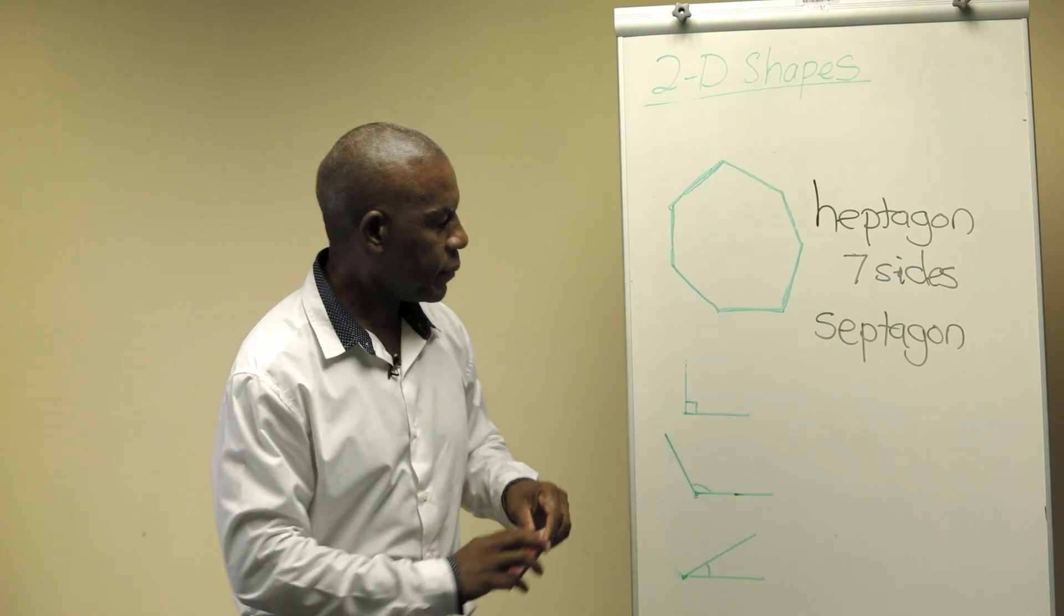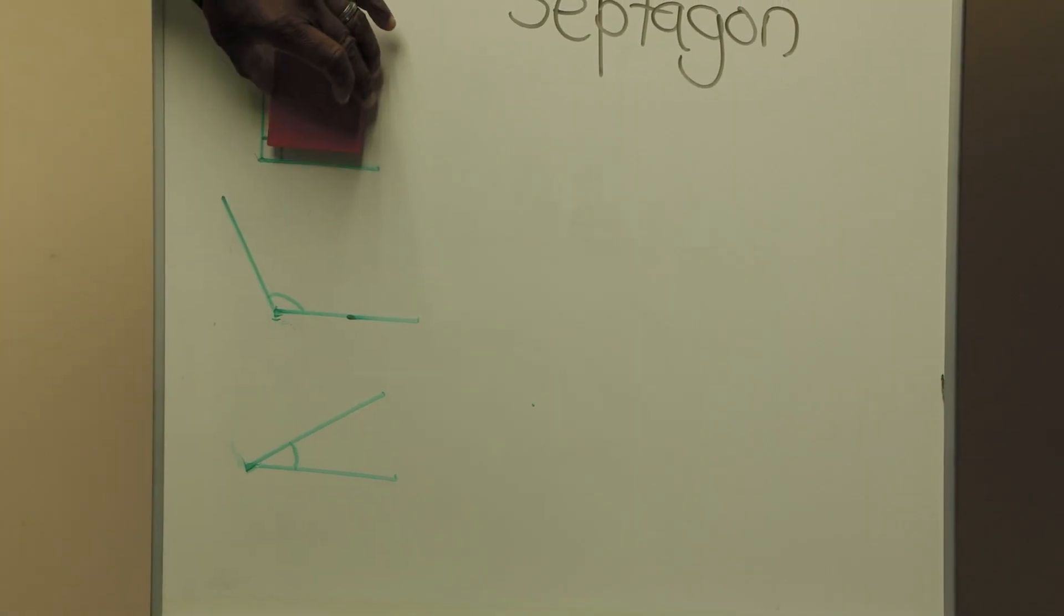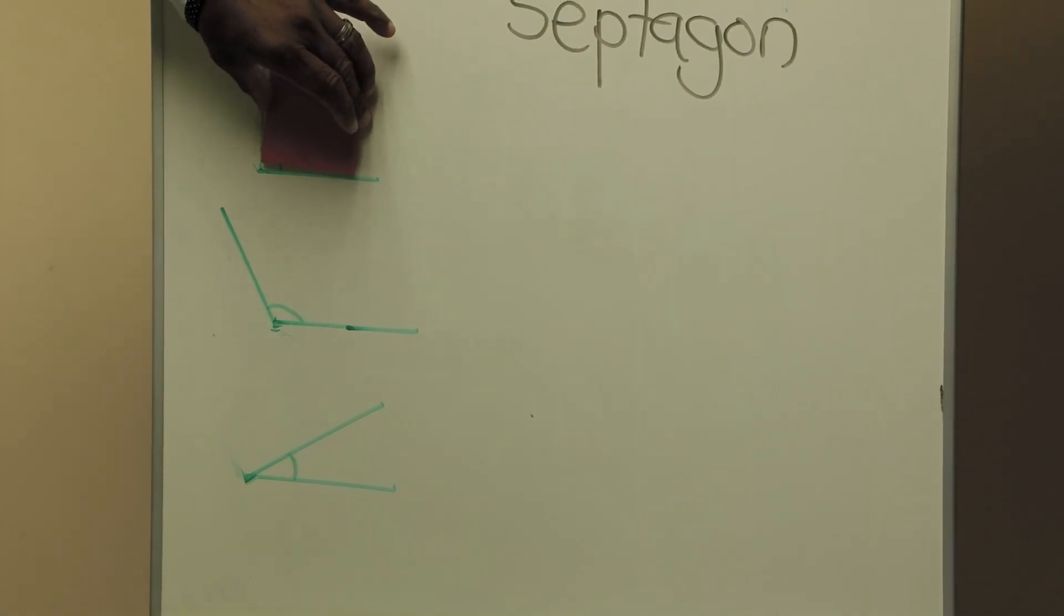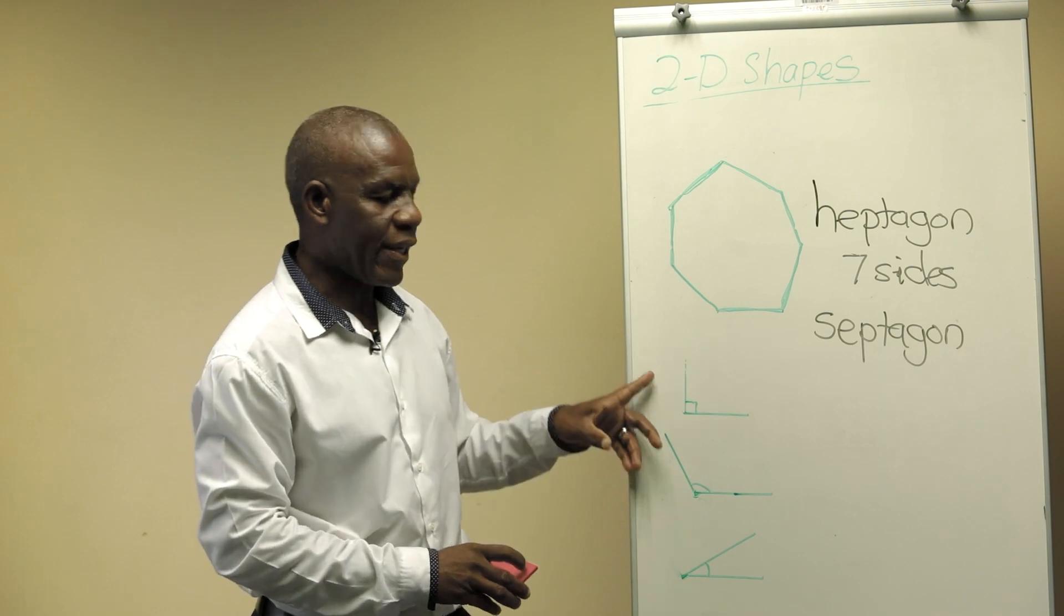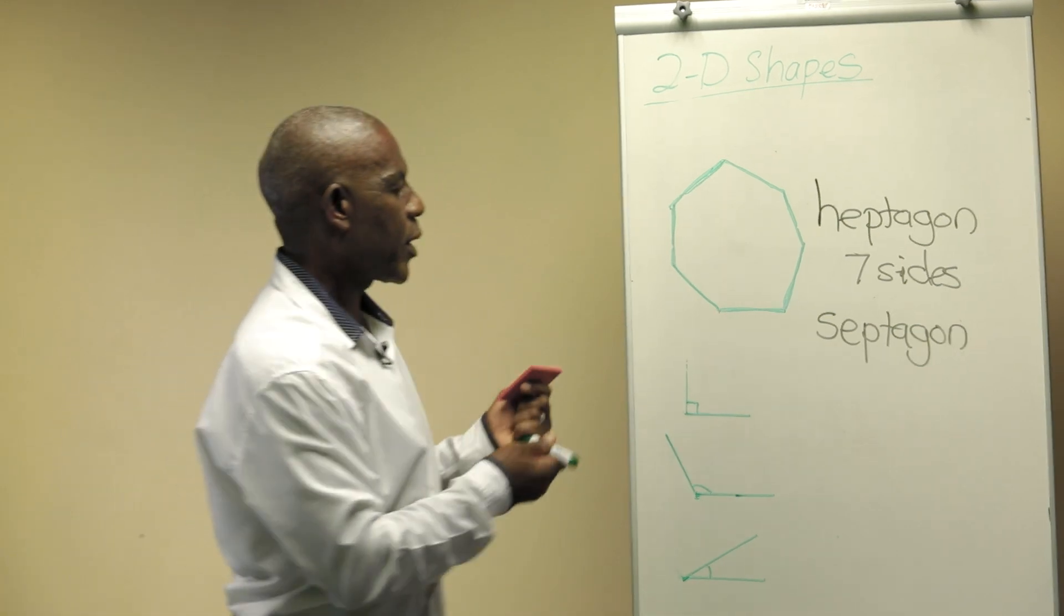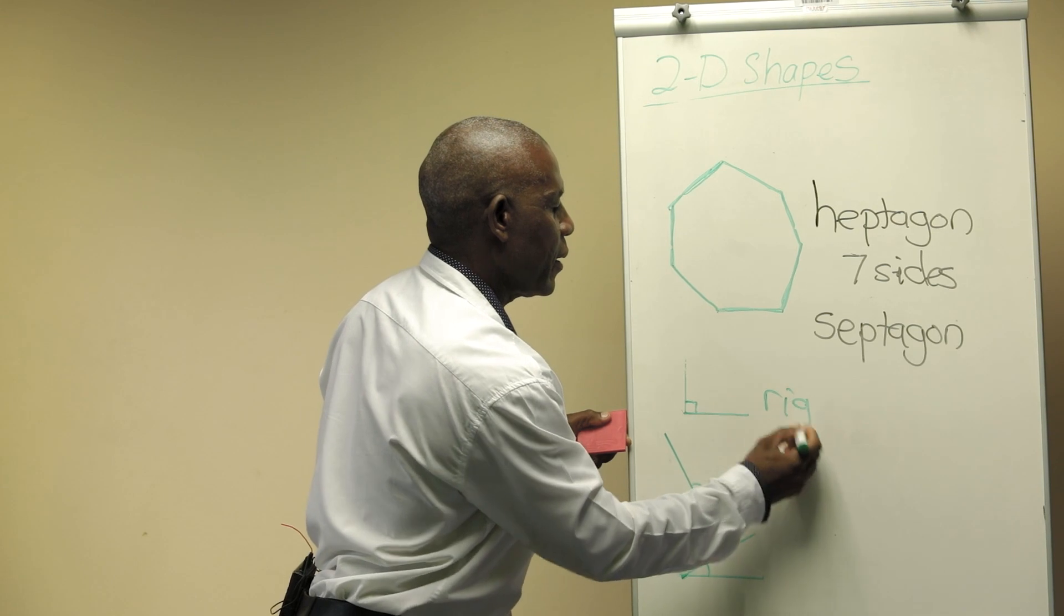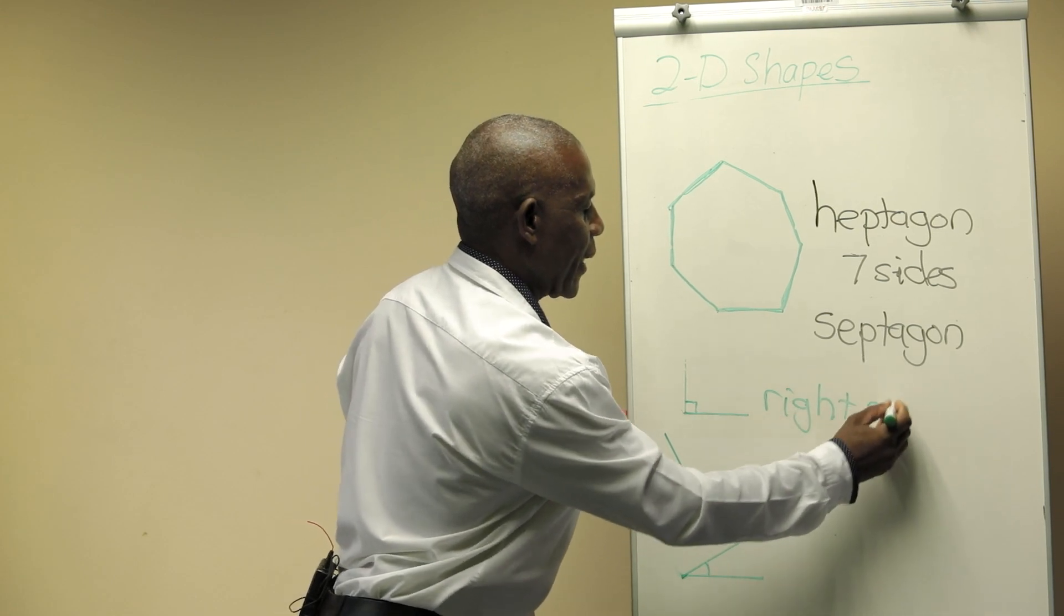The first one, if I slot in my square, it fits in perfectly. It's called a right angle.